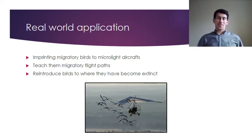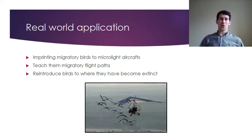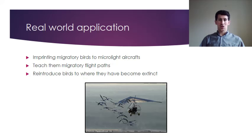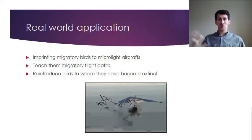There is also real-world application to Lorenz's theory. Some migratory birds are imprinted onto microlight aircraft — you can see the picture of a microlight with migratory birds following behind. This can teach birds migratory flight patterns, allowing scientists to reintroduce birds to areas where they've become extinct by imprinting them onto the aircraft to guide them along established migratory routes.